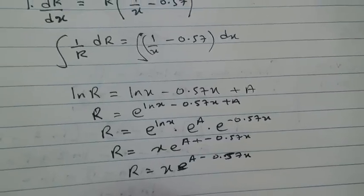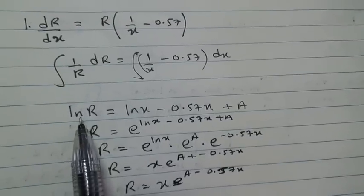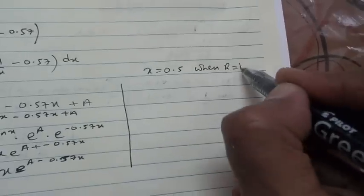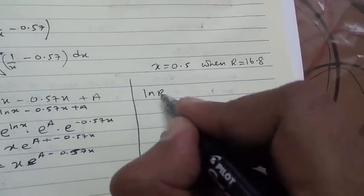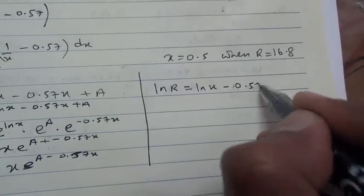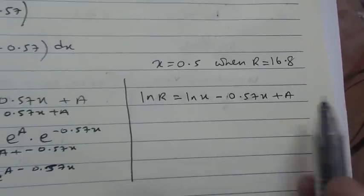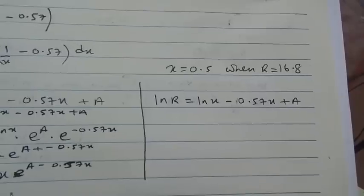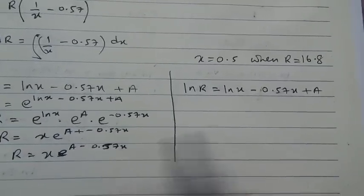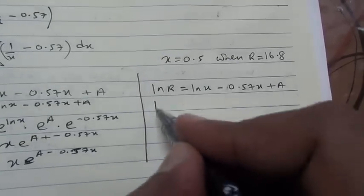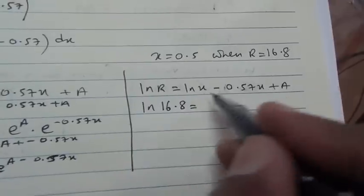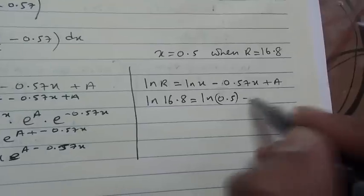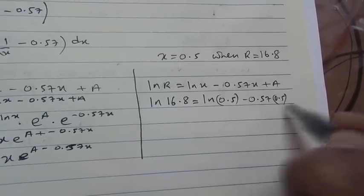We have ln R equals ln X minus 0.57X plus A. The question states that X equals 0.5 when R equals 16.8. I'm trying to find the value of the constant A so I can substitute in to get R with respect to X. Therefore, ln 16.8 equals ln 0.5 minus 0.57 times 0.5 plus A.